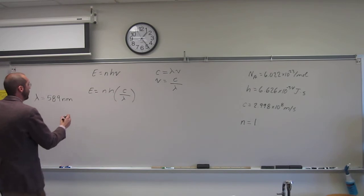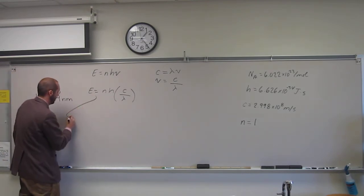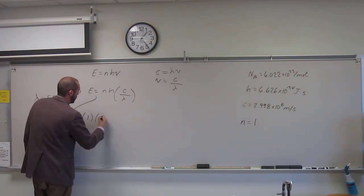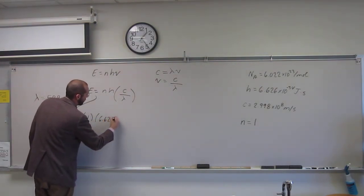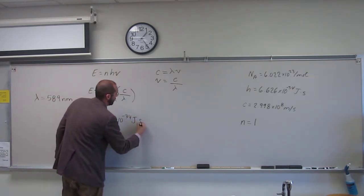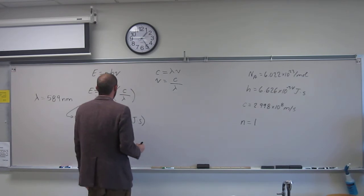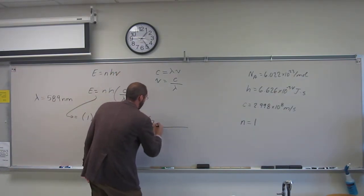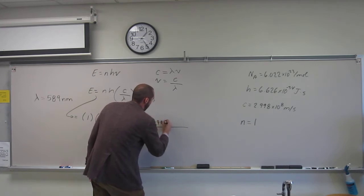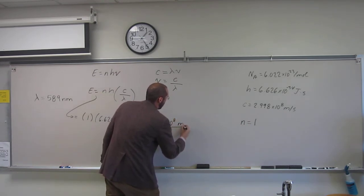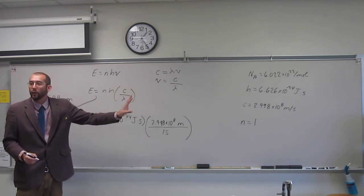So n equals 1, h equals 6.626 times 10 to the negative 34th joule second, times c, which is 2.998 times 10 to the 8th. And remember, just like what we did with the other one.